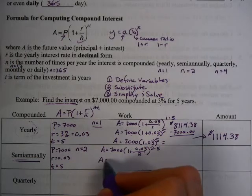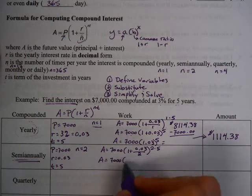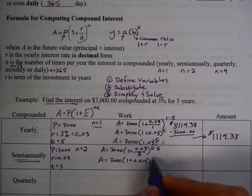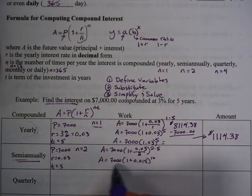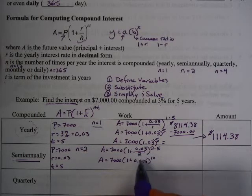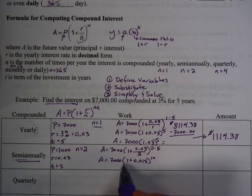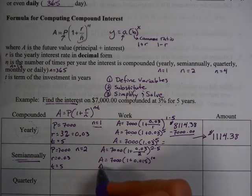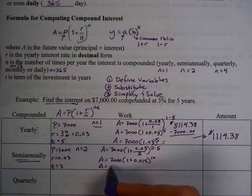So I substituted in exactly the same. 7,000, 1 plus the rate. But instead of dividing by 1, I have to divide by 2, because that's where n is in my equation. N is 2. And then 2 times 5. And again, you simplify this so that you get something like this. That's 10. So 0.03, which is 3 hundredths, divided by 2 is 0.015, raised to the 2 times 5, which is 10 power.